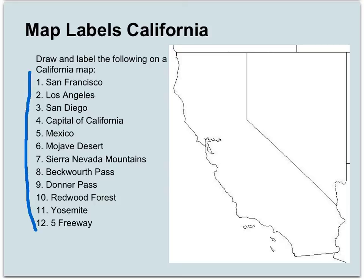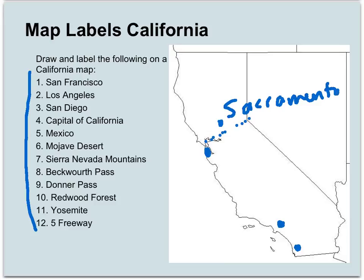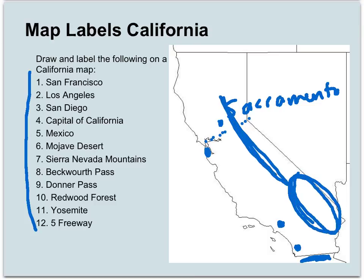Here come the answers. San Francisco is located right in there. Los Angeles is located right down about there. San Diego is here. The capital of California — Sacramento — remember, go between San Francisco and that bend, then up a little bit about halfway: that's Sacramento, located there. Mexico is located below California, south of California.